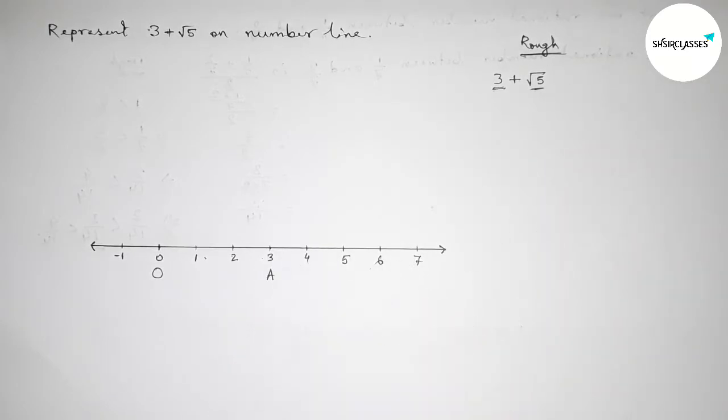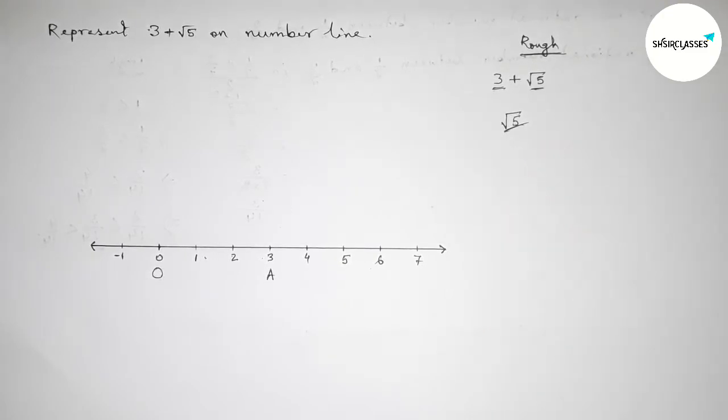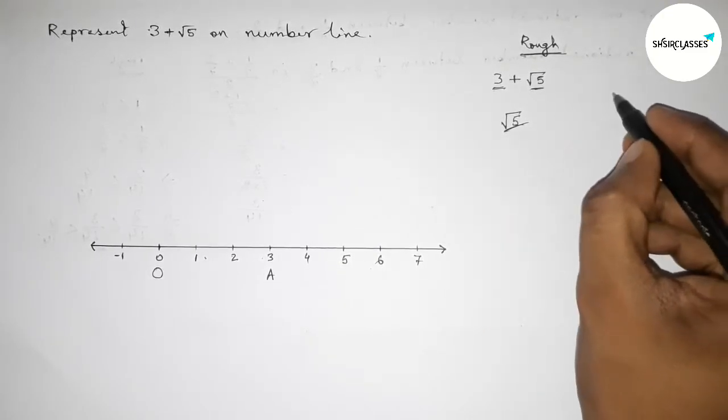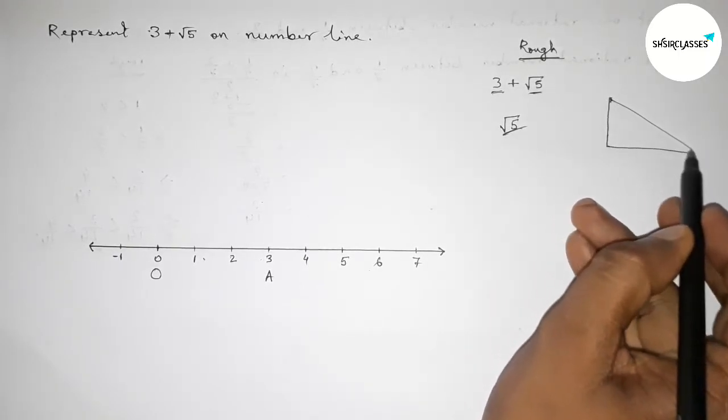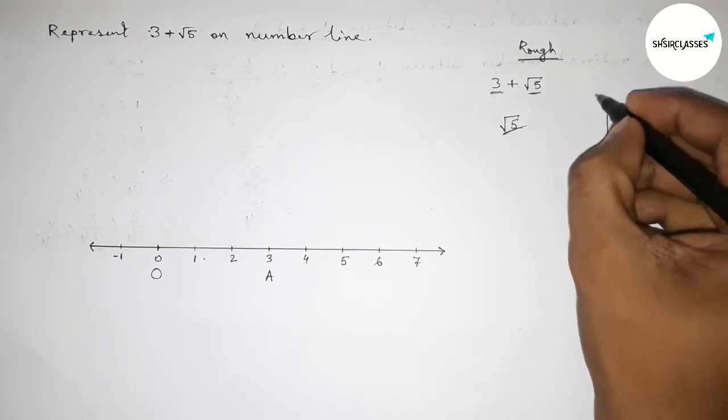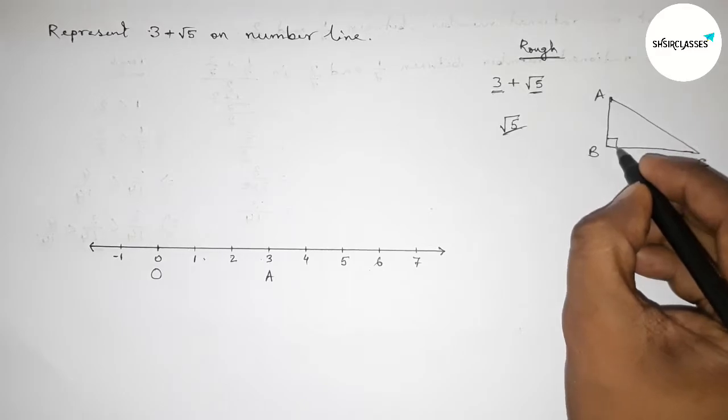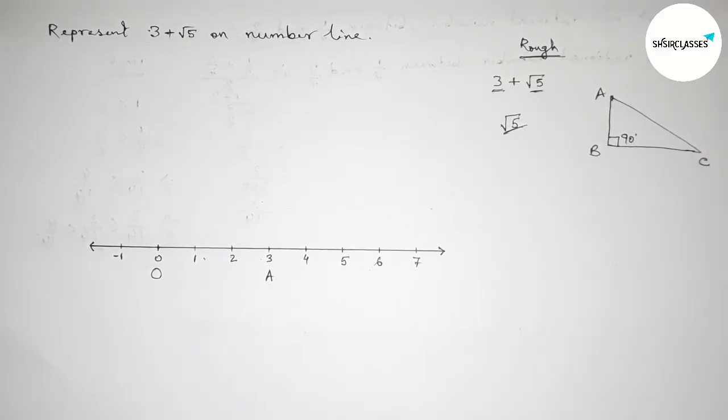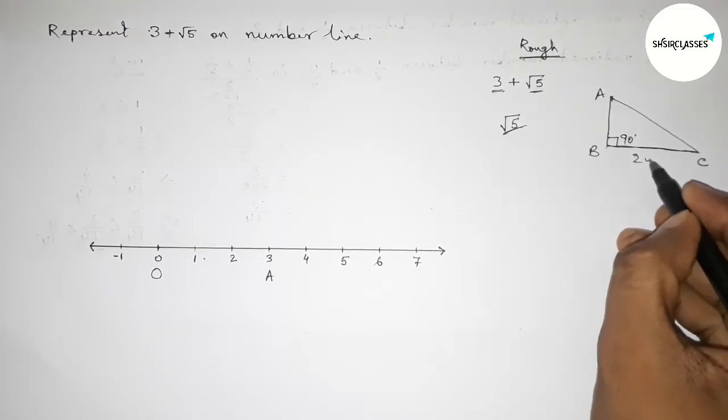So now discussing about root 5. Now first, drawing here a right angle triangle by this way. So this is ABC. Now taking this as 90 degree angle, obviously. Next, if you take the base at the right angle, the base is equal to 2 unit length and the perpendicular equal to 1 unit length, then what is the hypotenuse?